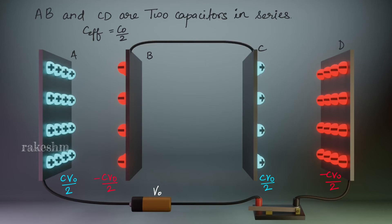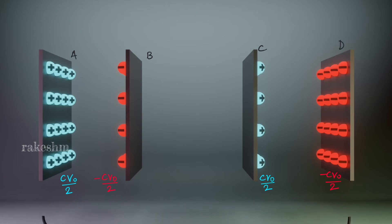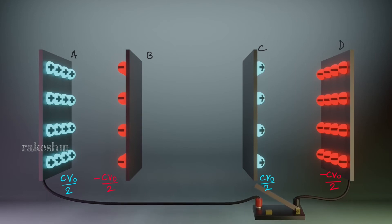Next, this wire BC is removed. When the wire BC is removed there is no redistribution of charge and the charge stays the same. Next, this battery is also removed. The charge distribution on the plates still remains the same. Now A and D are connected by a conducting wire. When we connect these two plates, the potential of A and D must be the same, so charges will redistribute such that the potential of A and D is equal.